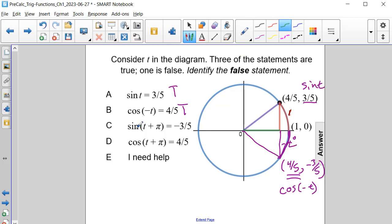Now let's look at choice C, the sine of t plus pi. Here's t, and then pi is an extra 180 degrees, or half of a circle. I'm going to redraw the triangle this way.